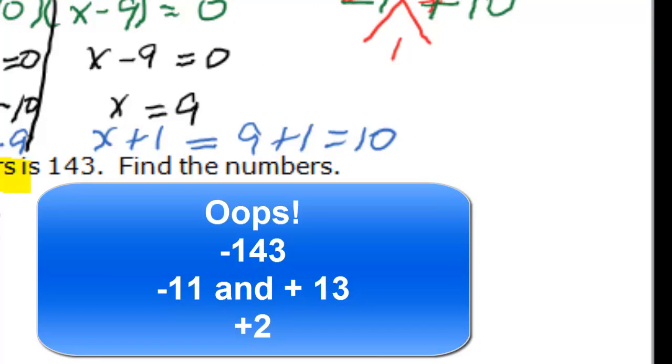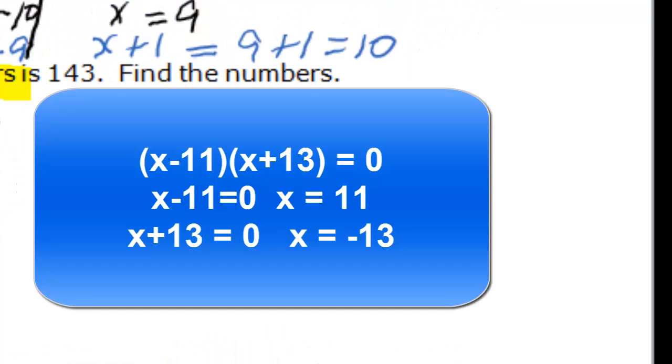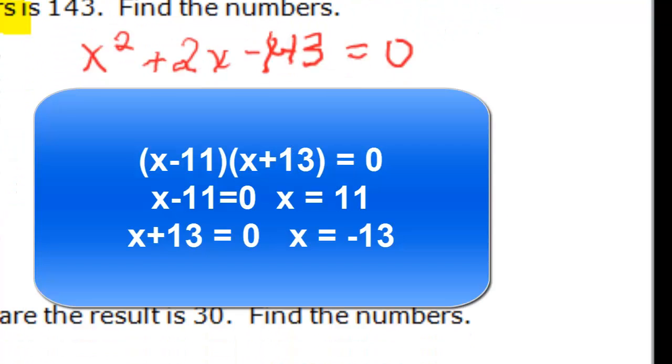Now we have negative 143, b is 2, so that makes our m and n negative 11 and positive 13. Again we have x squared having a coefficient of 1. So we can just write x minus 11 times x plus 13. And those two factors are equal to 0 and if we work those two out.